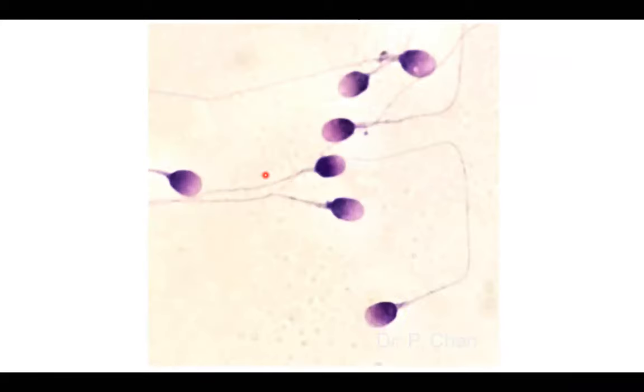Here we have sperm, pretty simple and straightforward, basic anatomy to them. They have three main regions: the head that contains the nucleus, the body or the mid region which contains the motor portion, the mitochondria, and then we have the flagellum, the tail portion of that as well.